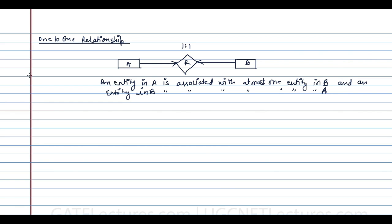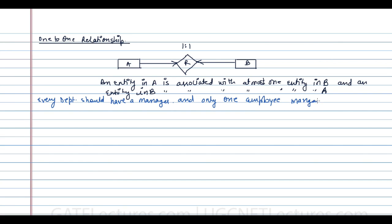For example, consider a manager relationship: every department should have a manager, and only one manager manages a department. Only one employee manages a given department. Note that managers are also employees.